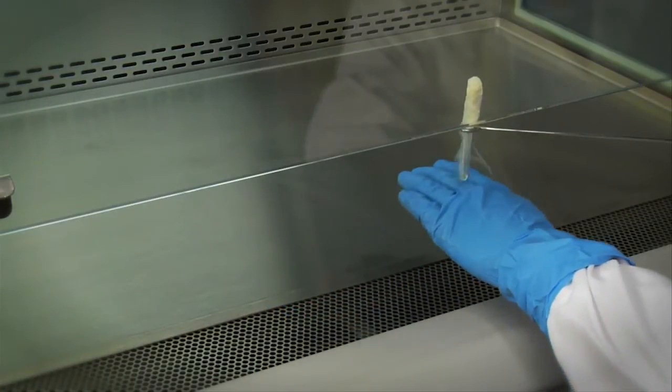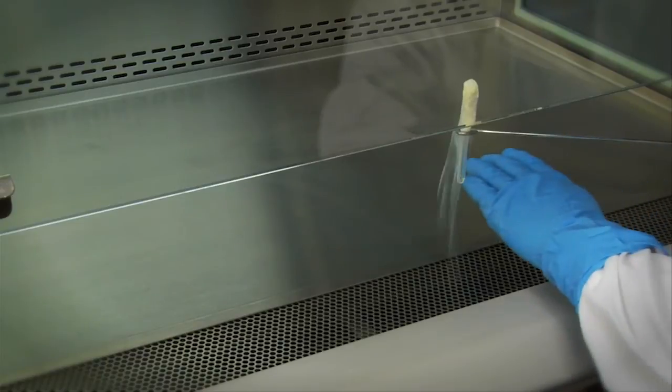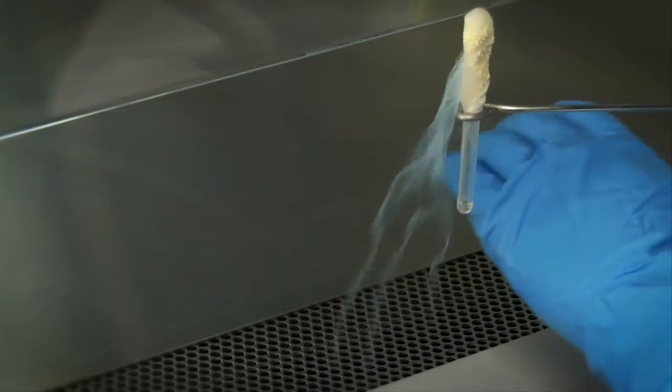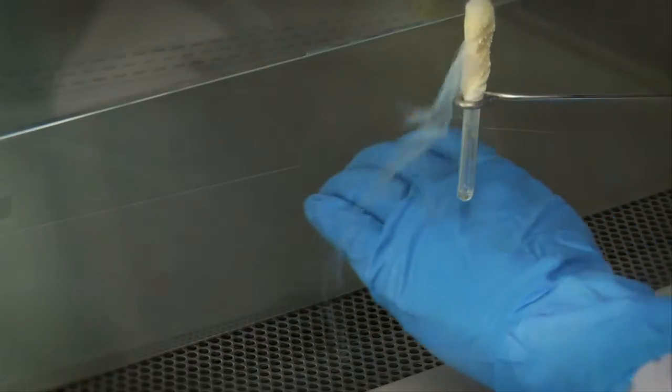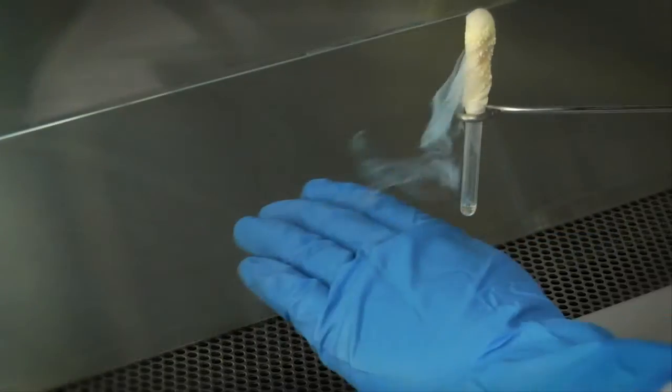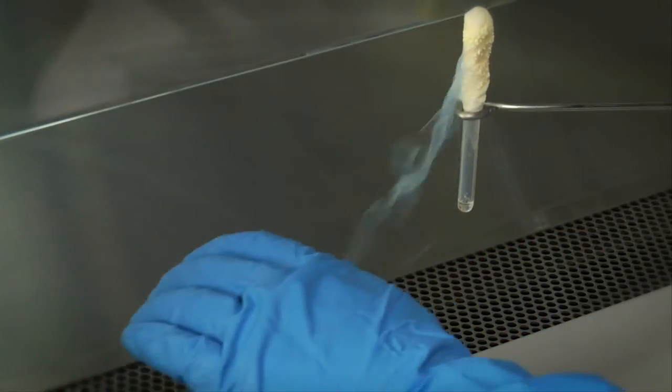The rapid movement of a worker's arms in a sweeping motion into and out of the cabinet will disrupt the air curtain and may compromise the partial barrier containment provided by the BSC. Moving arms in and out slowly perpendicular to the face opening of the cabinet will reduce this risk.